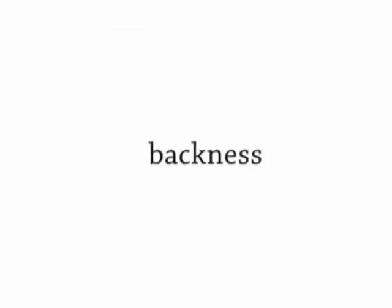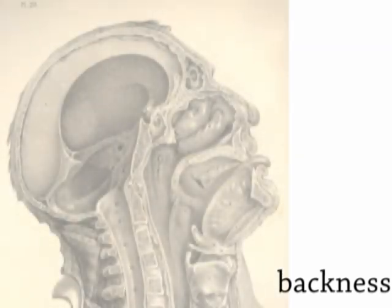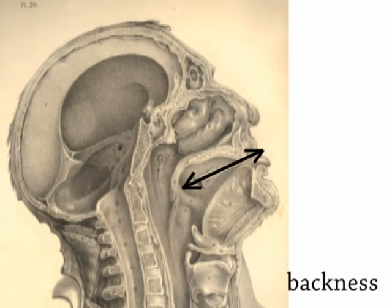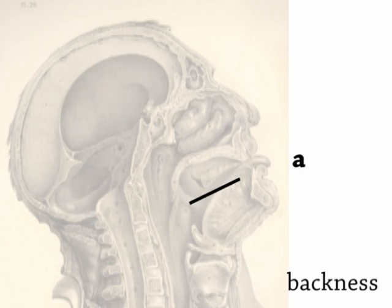Backness is the other feature we should distinguish at this point. Backness involves what we can think of as how far forward and how far back our tongue is in our mouth — that's the anatomical way of thinking about it. So if you again say the vowel E, your tongue is fairly far forward in your mouth, but if you say AH, you pull it back. So that's the feature backness.